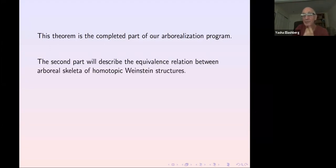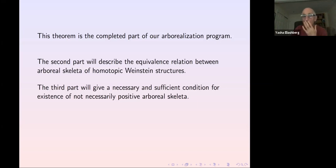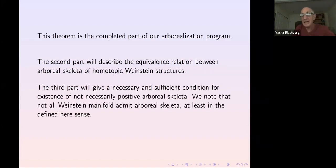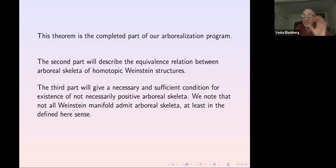The second part, which we plan to do next, describes the equivalence relation between arboreal skeletons of homotopic Weinstein structures — what moves are allowed. We have some conjectures but haven't proved them. The third part addresses the non-positive case: what can be proved for a general arboreal skeleton. There is definitely a constraint for a Weinstein manifold to have an arboreal skeleton in this sense — for instance, if c₃ is nonzero then such a skeleton does not exist.